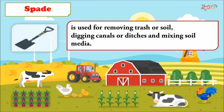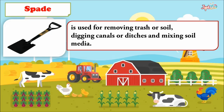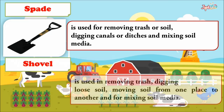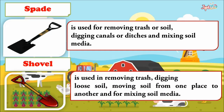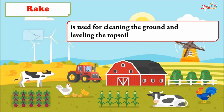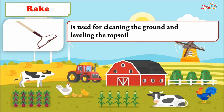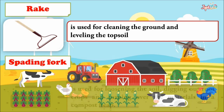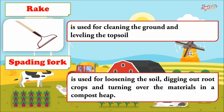The spade is used for removing trash or soil, digging canals or ditches, and mixing soil media. The shovel is used for removing trash, digging loose soil, moving soil from one place to another, and for mixing soil media. The rake is used for cleaning the ground and leveling the topsoil.